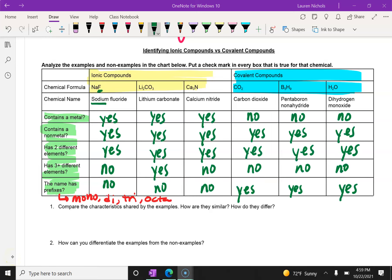Okay, so now that you can see your answers and check your work, one thing I want to point out is that our covalent compounds all have prefixes. They do not have three or more elements, and they do all contain non-metals, but there are no metals.